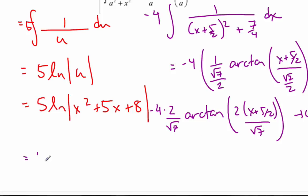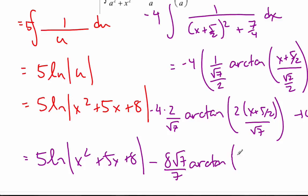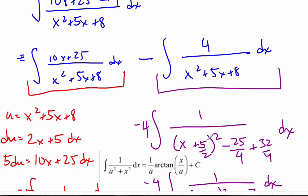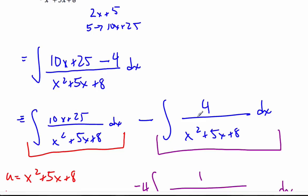And finally, putting it all together, hopefully, 5 ln x squared plus 5x plus 8 minus 8 root 7 over 7. Arctangent, 2x plus 5 over root 7 plus c. And that is my anti-derivative. And my technique here was taking the fraction, breaking it up in parts, and doing a clever u substitution.